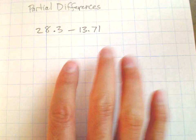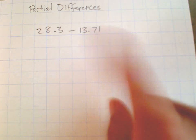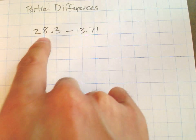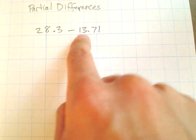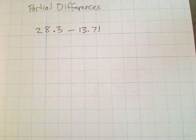Before we do anything, we want to quickly think about an estimate. I'm going to round this to about 30 minus about 10, which will give us about 20. Remember, your estimate doesn't have to be super exact.